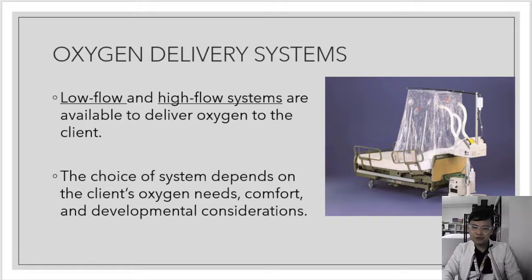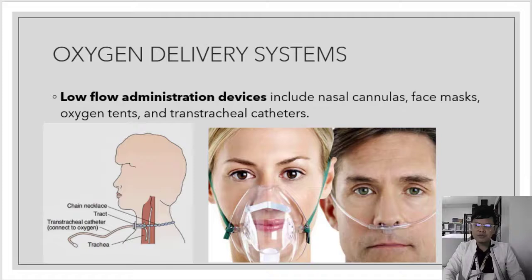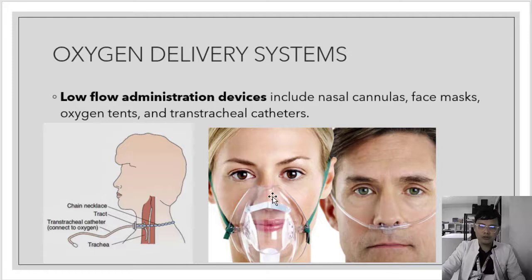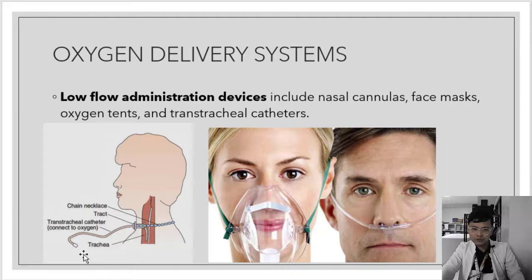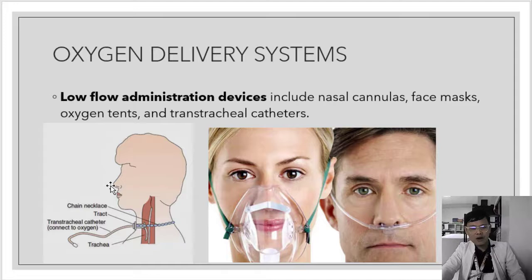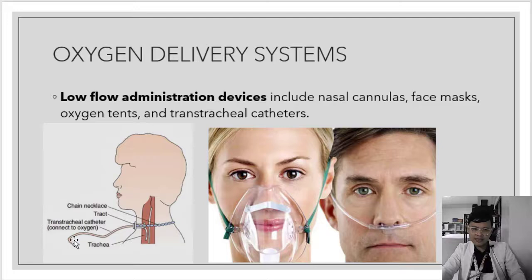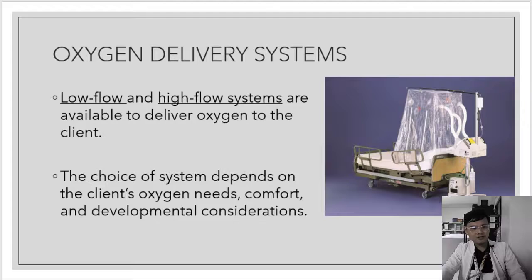The oxygen delivery system includes low flow and high flow systems. Low flow administration devices include the nasal cannula, face mask, oxygen tent, and transtracheal catheters. Some patients have a tracheostomy — a hole in the trachea — where a catheter is inserted to deliver oxygen. The choice of device depends on the doctor's order, but in emergency cases, nurses can make the decision and then inform the doctor.